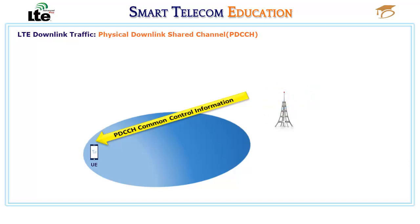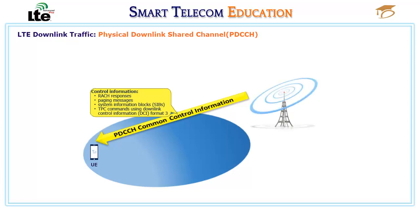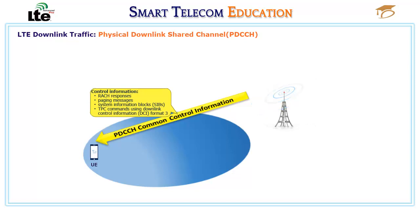The PDCCH carries the following common control information: RACH responses, paging messages, system information blocks (SIBs), and TPC commands using downlink control information DCI format 3.